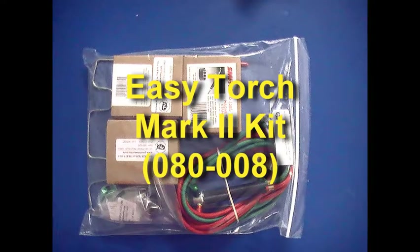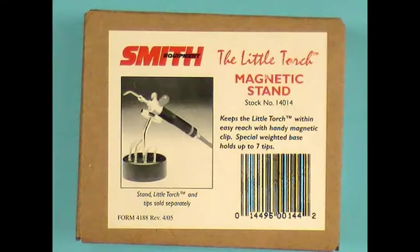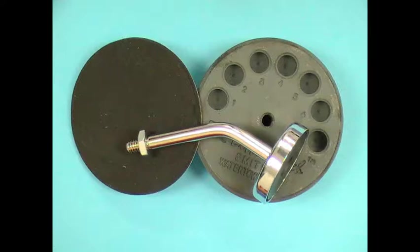The EasyTorch Mark II kit is supplied as shown. Remove all components from the package prior to assembly. The weighted magnetic stand is removed from its package. Within, you will find the weighted stand and base pad. Also, you will need the magnetic stand arm.